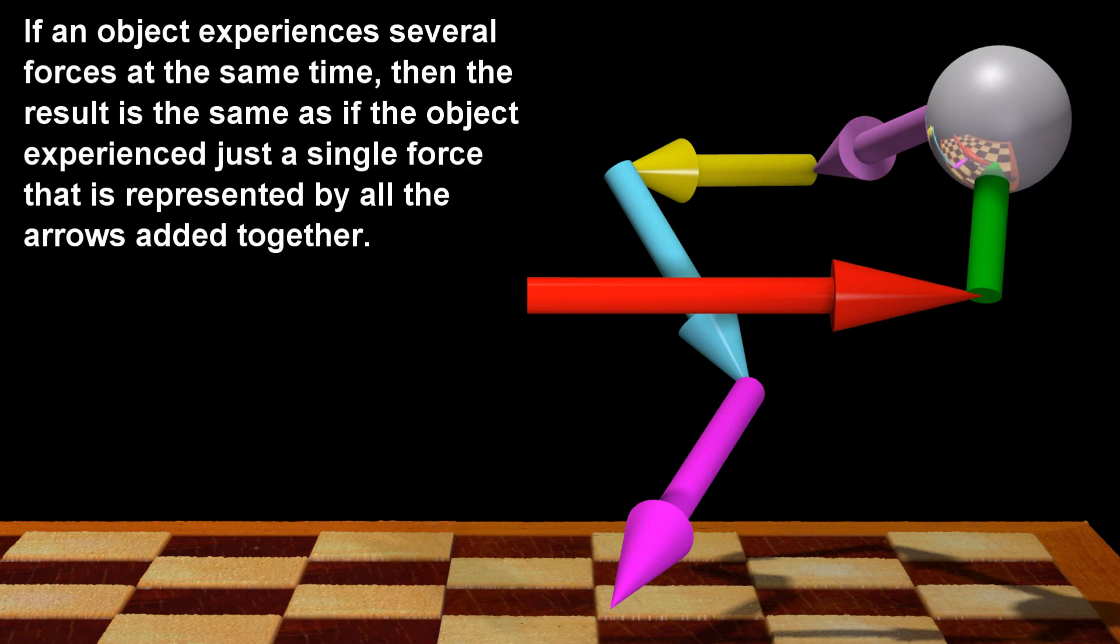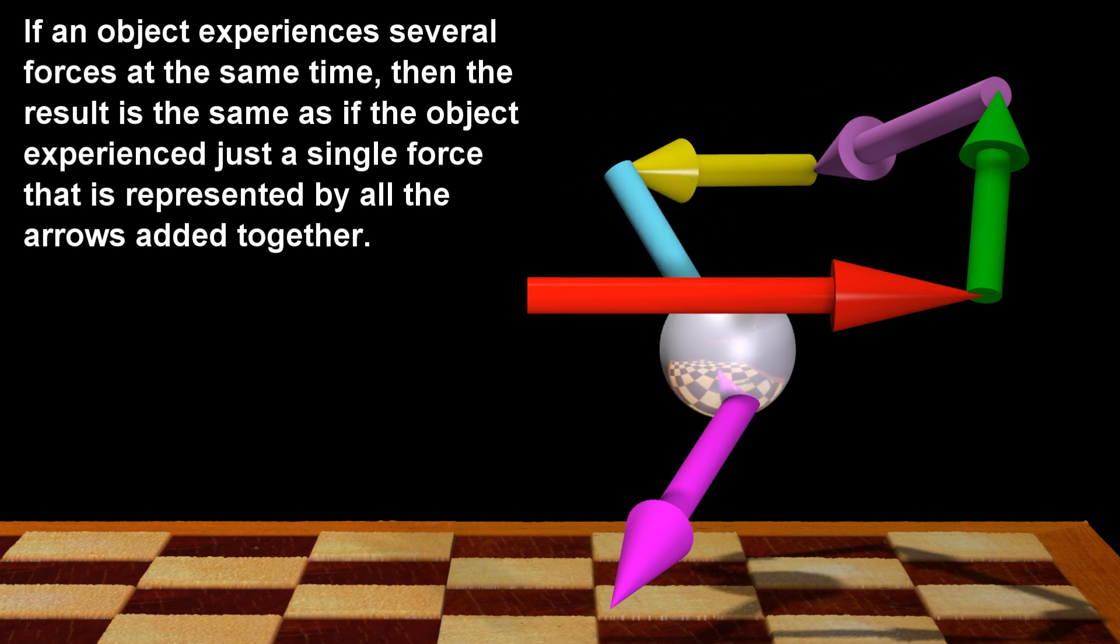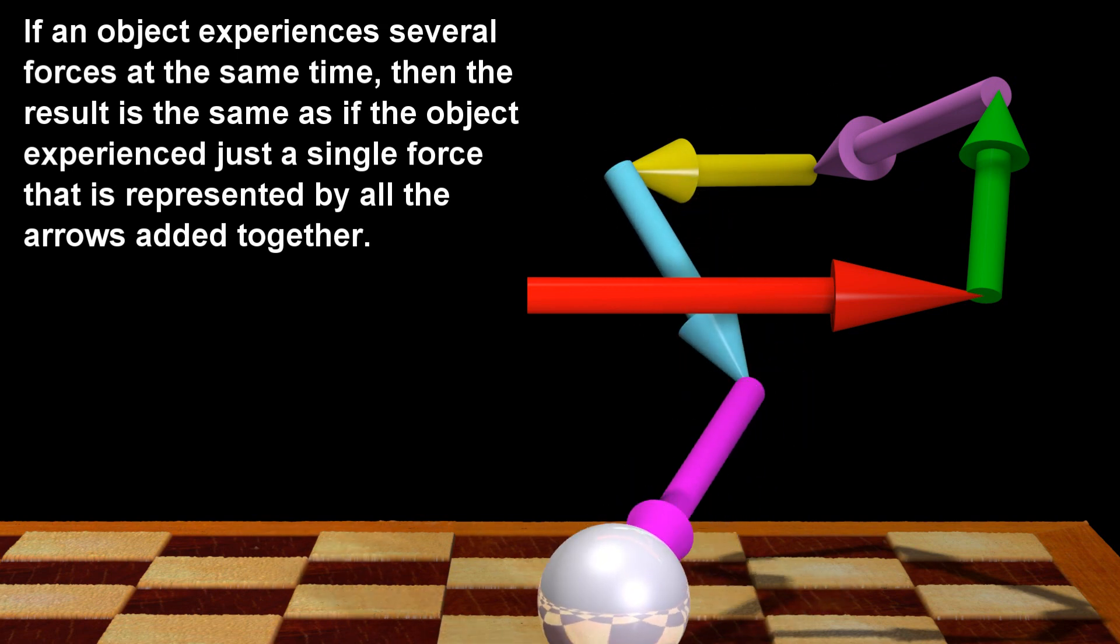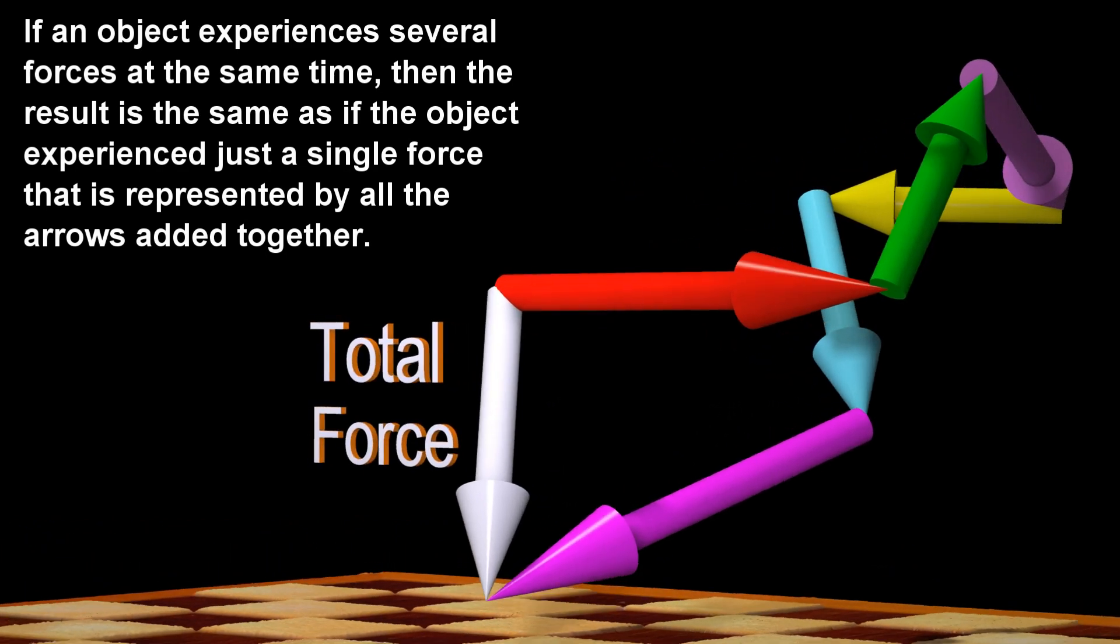If an object experiences several forces at the same time, then the result is the same as if the object experienced just a single force that is represented by all the arrows added together.